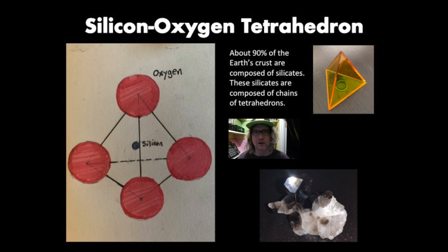90% of our earth's crust is made up of something called silicates, which are made up of the silicon oxygen tetrahedron. You can see there's a picture there of some quartz. That quartz is an example of a silicate. We're going to refer to tetrahedrons as triangular pyramids.